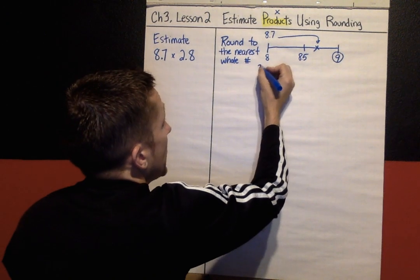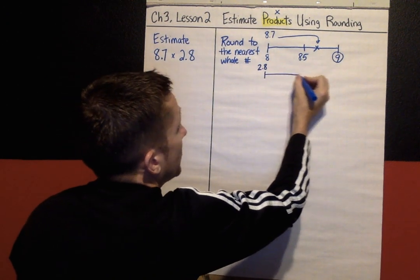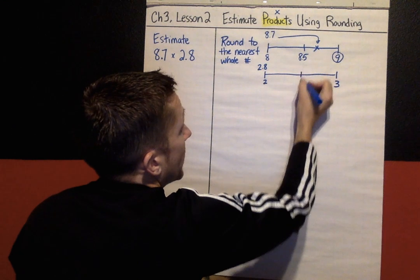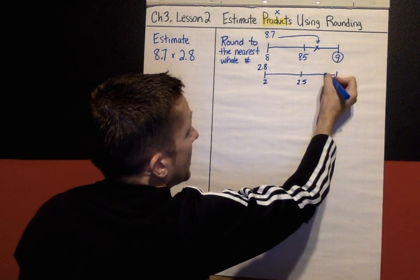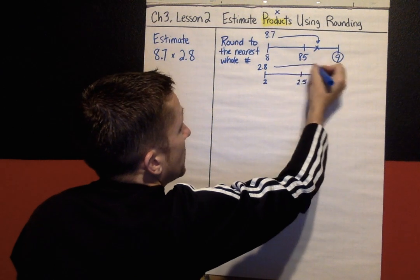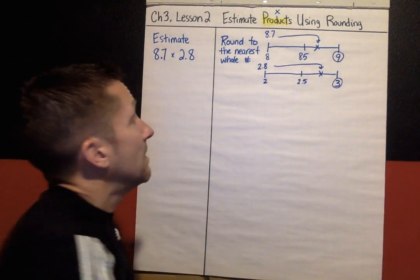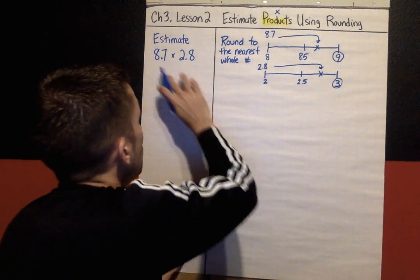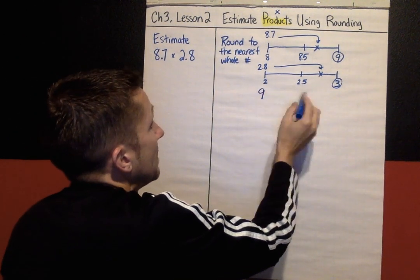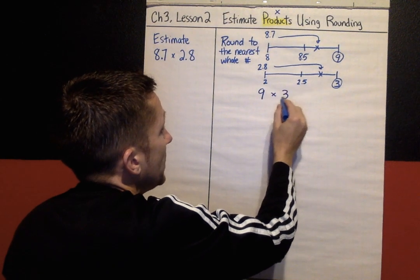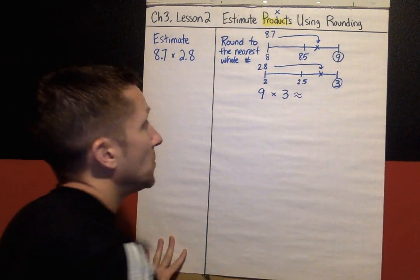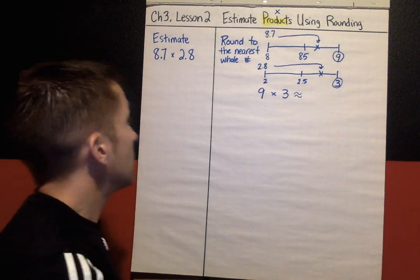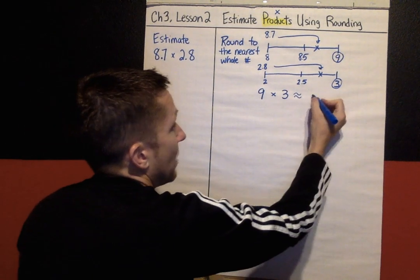Same thing with 2.8 — I'm going to round that to the nearest whole number. It's between 2 and 3, right in the middle would be 2.5, and 2.8 is closer to 3. So my estimate: instead of 8.7 I would use 9, and instead of 2.8 I would use 3. Those two wavy lines mean 'is about,' so my estimate for this problem would be about 27.